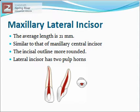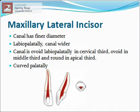Maxillary lateral incisor: the average length is 21 mm. The shape of the pulp chamber is similar to that of the maxillary central incisor, but there are a few differences: the incisal outline of the pulp chamber is more rounded, and the lateral incisor has two pulp horns. The root canal of the maxillary lateral incisor has a finer diameter than that of the central incisor; labiopalatally, the canal is wider and usually shows a constriction just apical to the cervix.